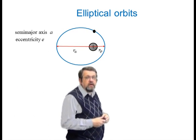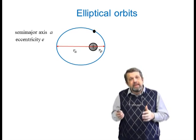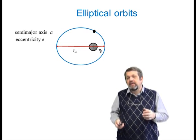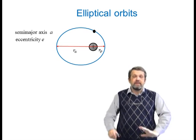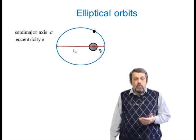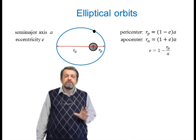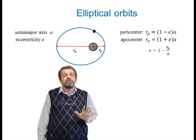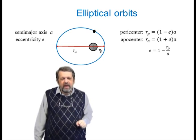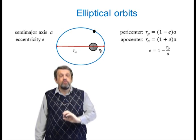The shape of an elliptical orbit is characterized by two numbers: the semi-major axis, which is half of the long axis of the ellipse, and the eccentricity. These relate to the paracenter distance, which is (1 − e)·a, and the apocenter distance, which is (1 + e)·a. Their sum is just 2a, and the eccentricity can be calculated as one minus the ratio of the paracenter distance to the semi-major axis.